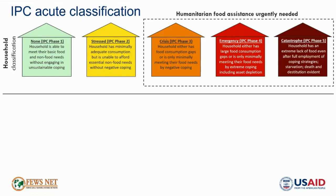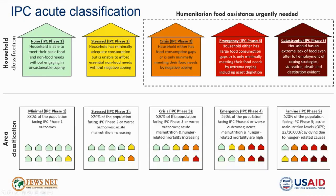After formulating expectations for the population distribution of household level food security outcomes, we assign area level classifications based on the worst phase of acute food insecurity that at least 20 percent of the population of any area is facing. As an example, for an area to be classified in phase three overall, the worst off 20 percent of households would be facing phase three outcomes or worse. So a key point for interpreting our mapping is that within any given area, there can always be households facing worse outcomes than the area level classification.